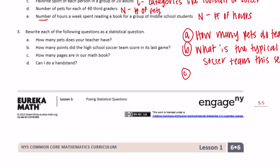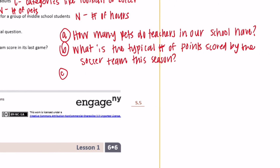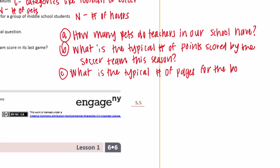Part C: 'How many pages are in our math book?' There's just one answer because you probably only have one math book. To expand it into a statistical question, we could ask: 'What is the typical number of pages for books in the school library?' — expanding it to cover all the books.